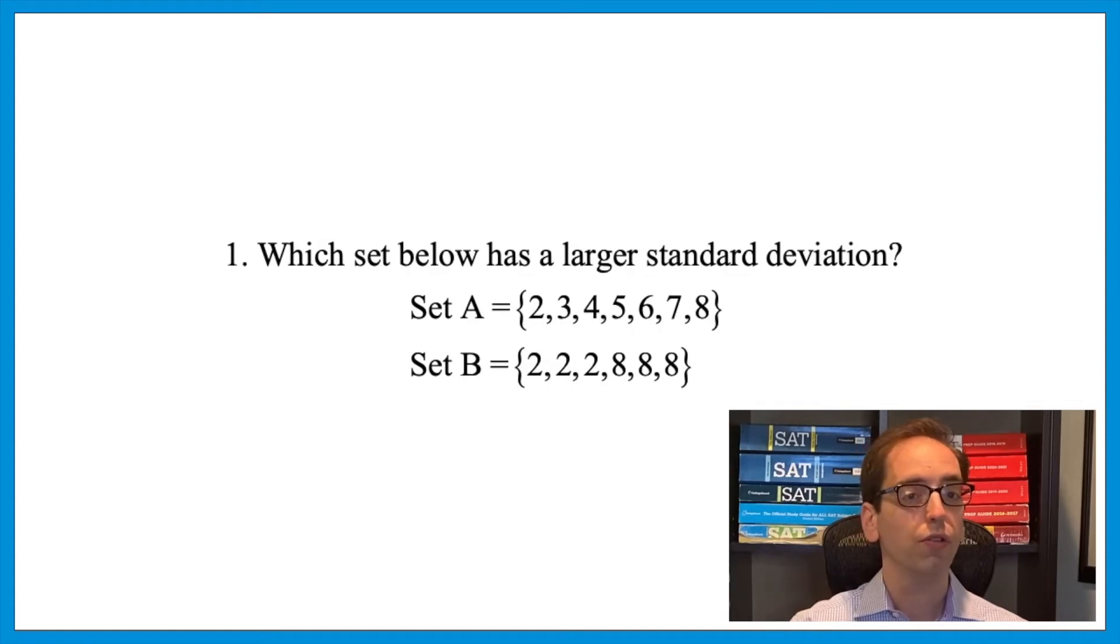In the first one, the numbers are clustered together. There's not a lot of space between them. But in B, they're all spread out from the middle. That means that B has a larger deviation. Think of deviation as how much data spreads out from the middle. In the second one, they're all very far apart from the middle value.